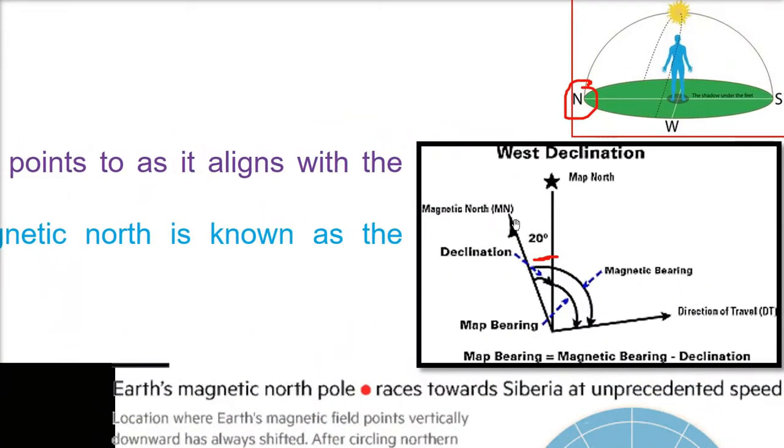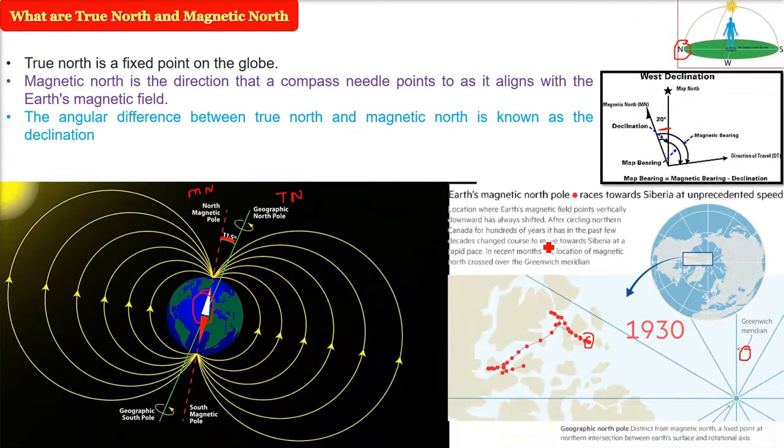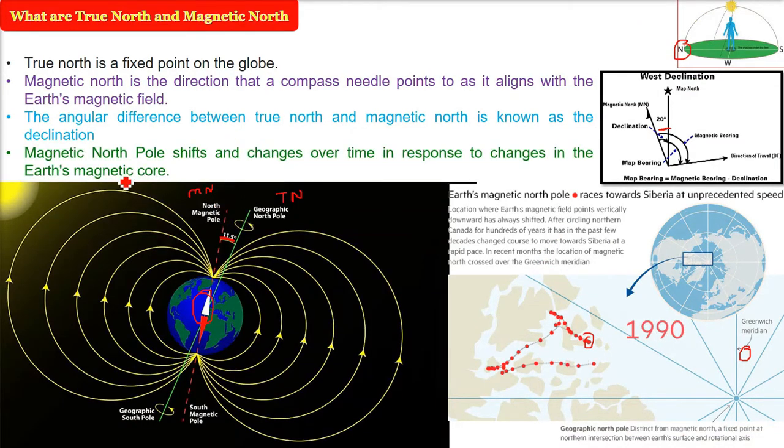So you can call it as 11.5 degrees as I showed you, it can be 20. But you know now that the angle I cannot commit, it may change. So you can say 10 to 20. So you have an angle between your true north and the magnetic north and that is going to be some angle which is around 15, 16 you can say on average.